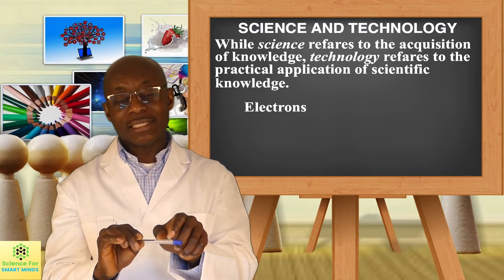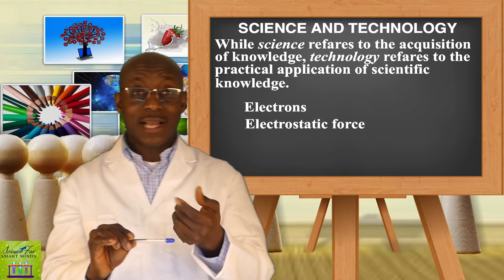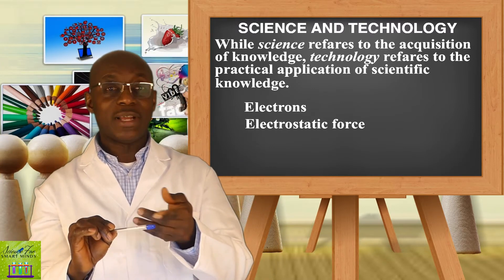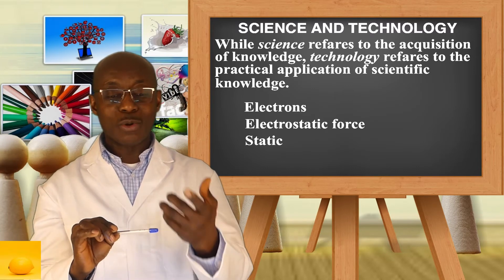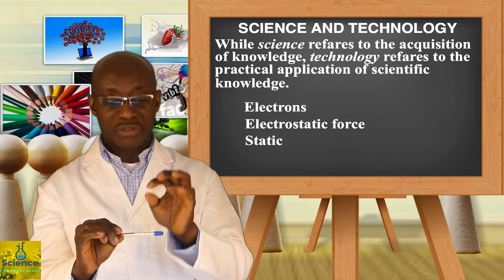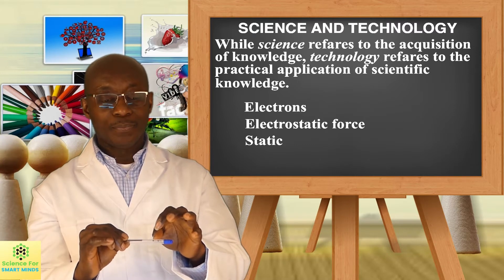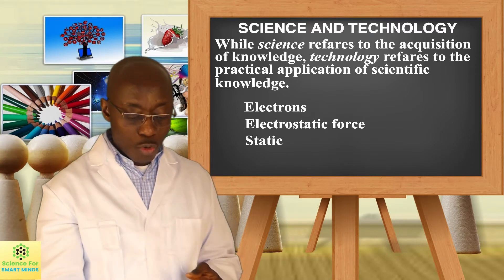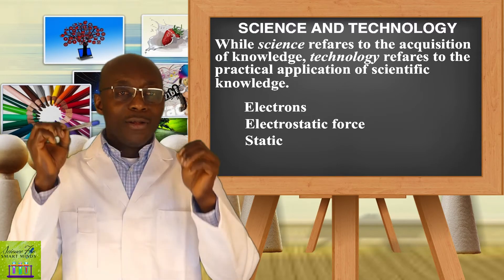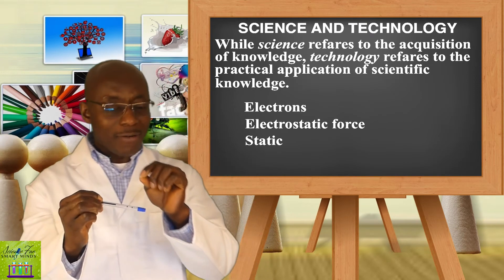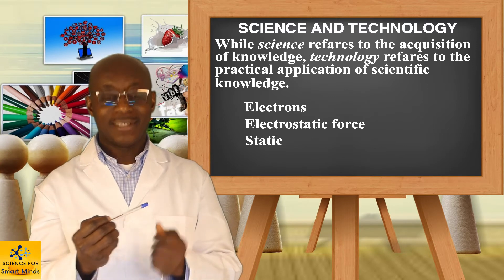That kind of electricity that stays at one particular place is what we call electrostatic force—a form of electricity that is somehow static. It's not moving. So this kind of force causes the pen to be able to attract those pieces of paper. Knowing this, or having knowledge about this kind of phenomenon, is science.